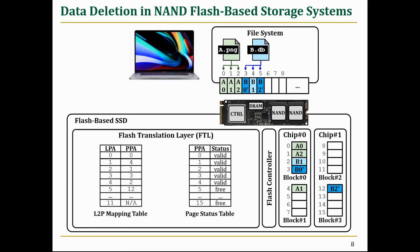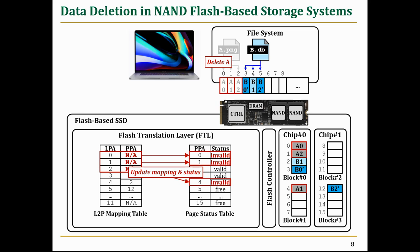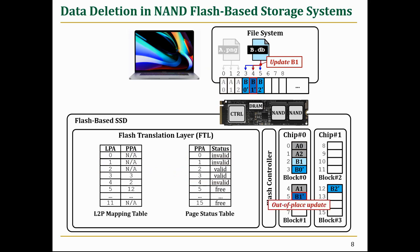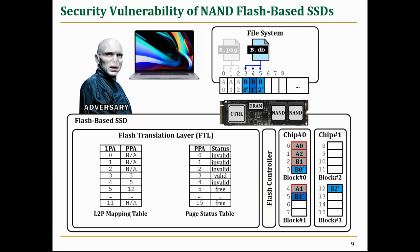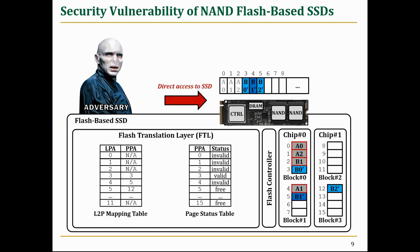Let's see what happens in an SSD when the file system deletes or updates a file. Most operating systems delete a file by removing the file's metadata, and FTL invalidates the related physical pages by just updating their status while leaving the actual contents intact in Flash chips. If a file system overwrites a logical page, FTL performs an out-of-place update, which also leaves the old data intact. These invalid pages remain in the SSD indefinitely until garbage collection erases the corresponding blocks. An adversary cannot retrieve old data through a file system, since the file system has already removed the links between the file and logical pages. Even with direct access to the SSD, the adversary cannot read deleted data using a standard IO interface, because FTL also deleted the mapping information of the invalid pages.